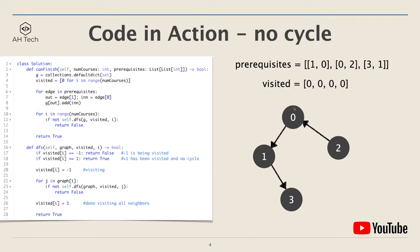Let's look at an example with four courses. The prerequisite array is [[1,0], [0,2], [3,1]], and here is the visualized graph: node 2 points to node 0, node 0 points to node 1, and node 1 points to node 3. For every course we'll have a visited array with two types of flags: negative 1 means the course is currently being visited in the previous DFS call, so if it's visited again we know there is a cycle.